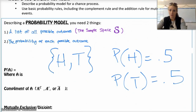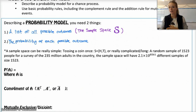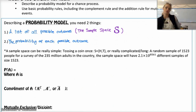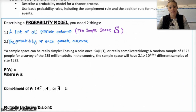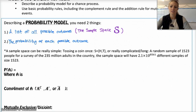You could also have a very complicated, very huge sample space as well, in which case you wouldn't list all of the possible outcomes, but you would describe what they are. For example, if you had a random sample of 1,500 people from a survey of all the millions of adults in the country, your sample space — the list of all possible samples of size 1,500 — would have 2.1 times 10 to the 8,561 different samples. Obviously you're not going to list all of those, but you should be able to describe them.